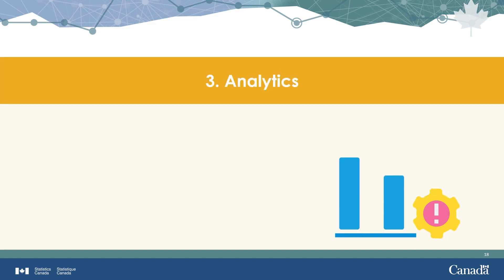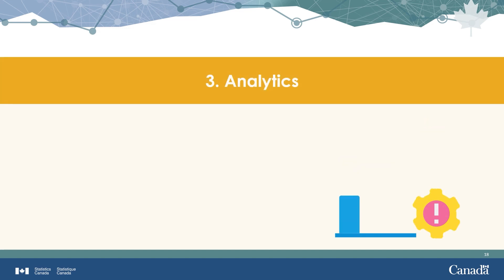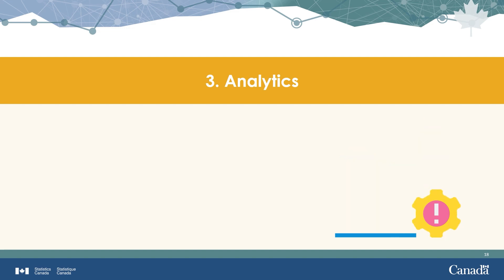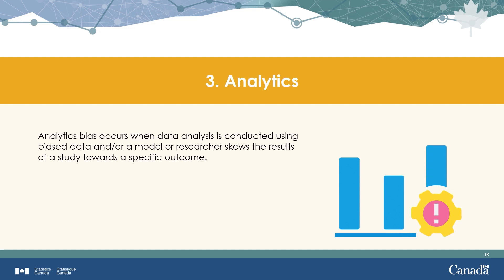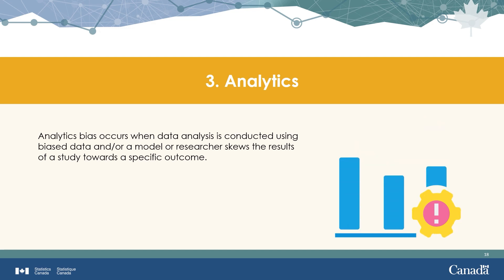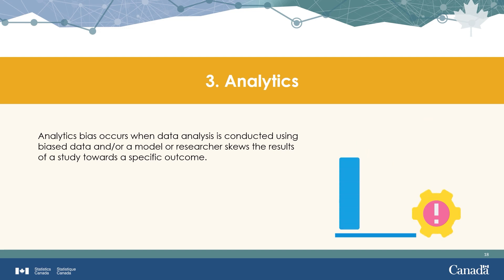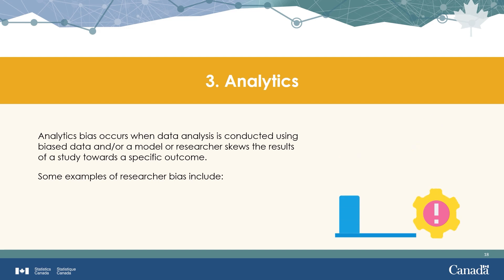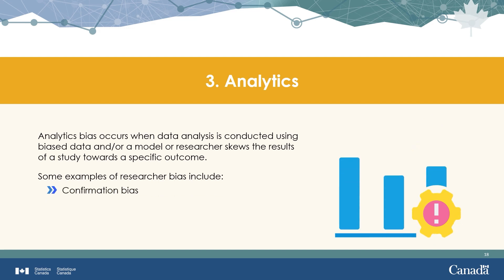So far we have covered how errors can lead to bias in the data collection and measurement stages. In this third and final section, we will discuss analytics bias, which occurs when data analysis is conducted using non-representative data, or when a model or researcher skews the results of a study towards a specific outcome. Some examples include confirmation bias and modeling bias.